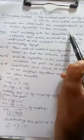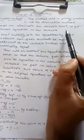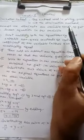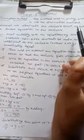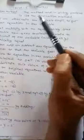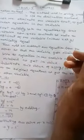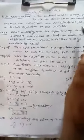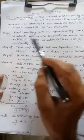Once we eliminate one variable, we get the value of that one variable. Then by substituting the value of that variable into any of the original equations, we will get the value of the other variable.